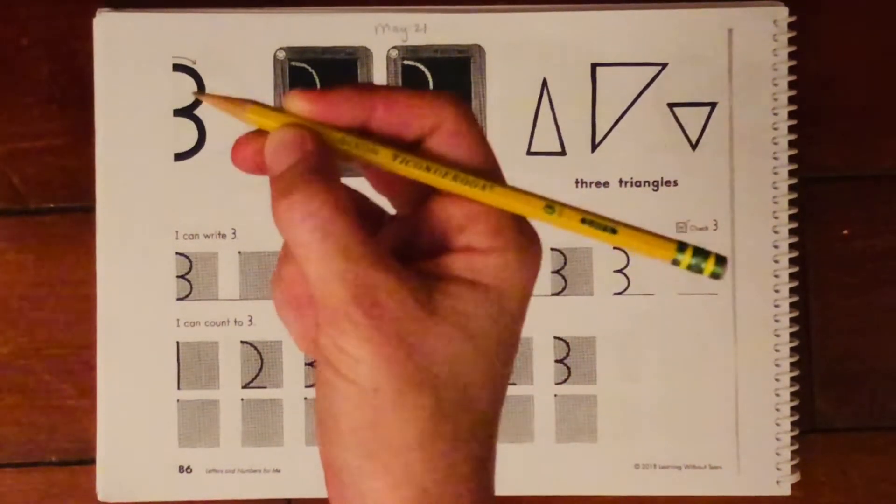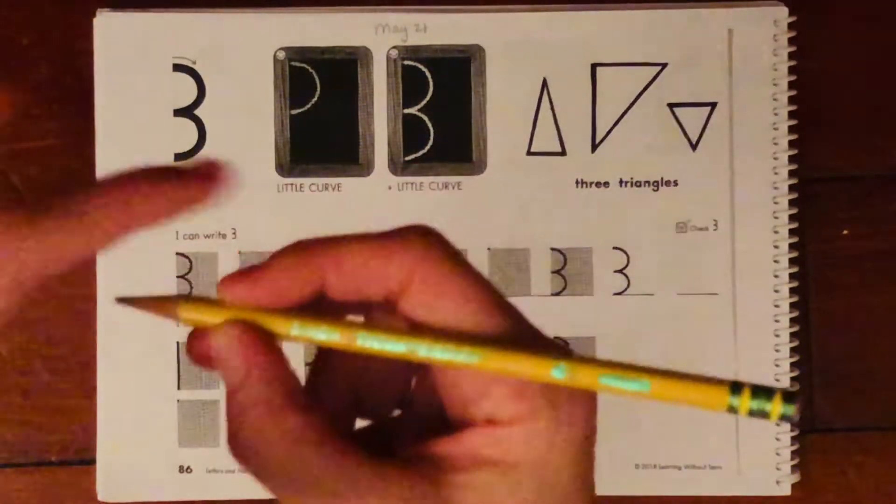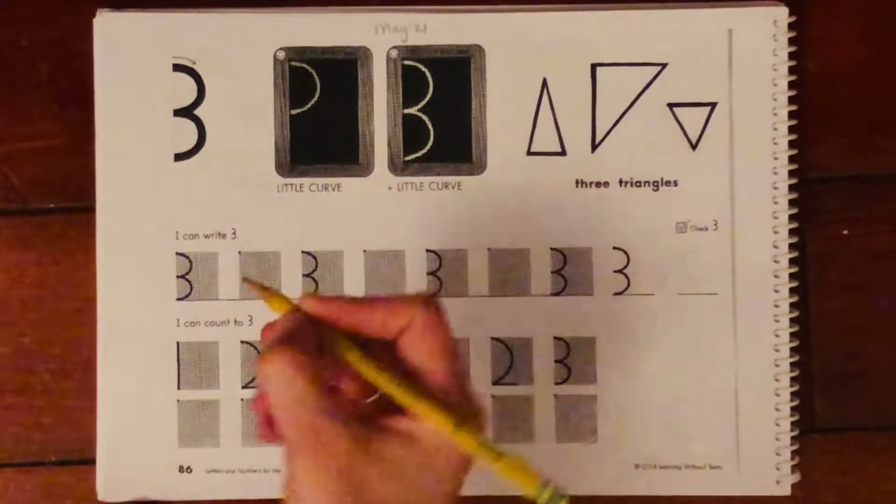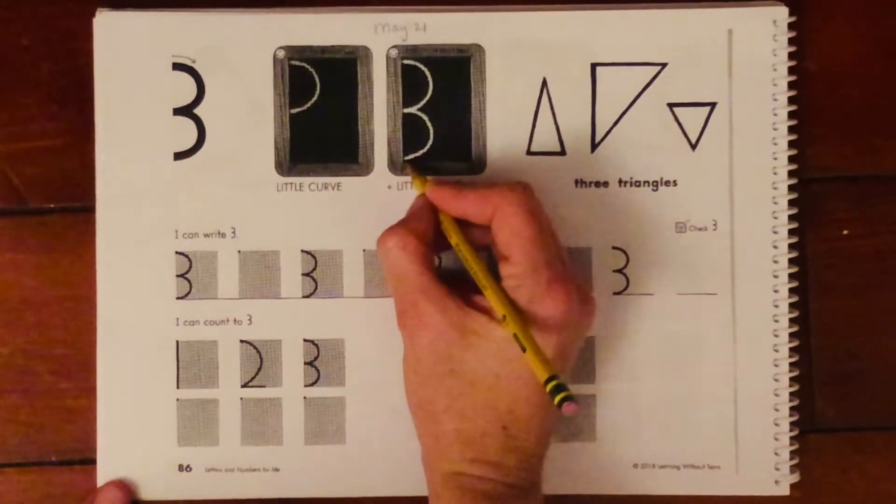So remember we always got to have good pencil grips, so our pencil should be like in a circle and we're pinching it. And for this number, we have a little curve and a little curve.